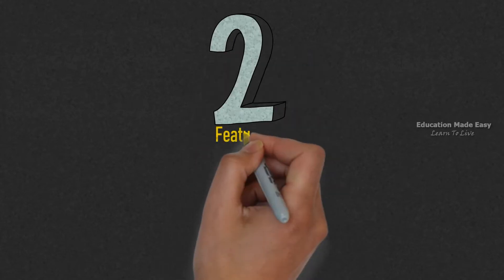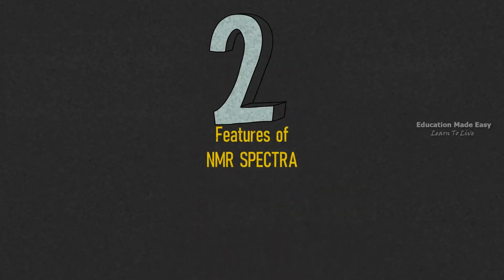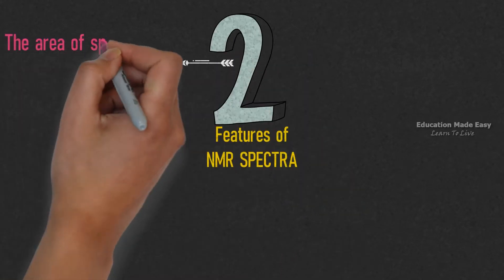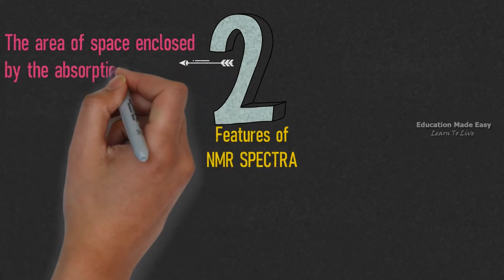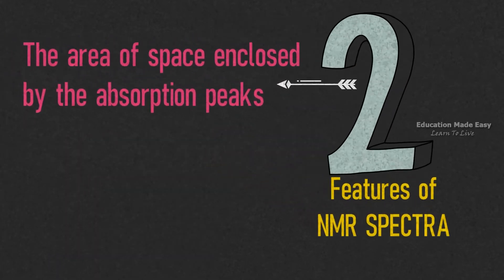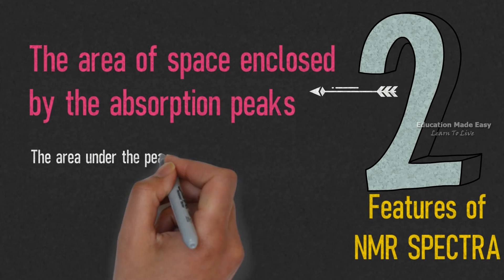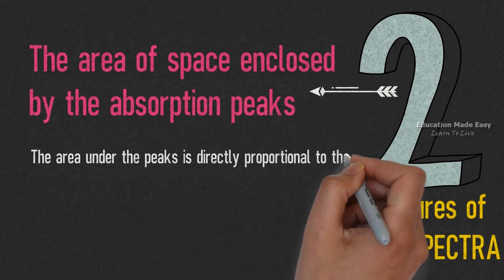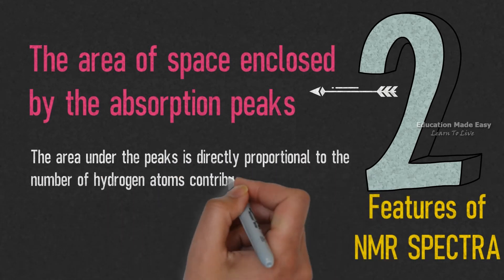There are mainly two features of NMR spectra. The first one is about the area of space enclosed by the absorption peaks. According to it, the area under the peaks is directly proportional to the number of hydrogen atoms contributing to the peak.